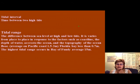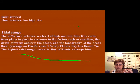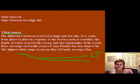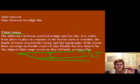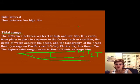The tidal interval is the time between two high tides. The tidal range is the elevation difference between sea level at low tide and high tide. The average tidal range on the Pacific coast is 1.5 to 3 meters; around Florida it's 0.7 meters. The highest tidal range is in the Bay of Fundy, Canada — about 15 meters or 45 feet.